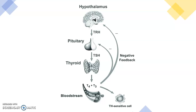The anterior pituitary is stimulated to release thyroid stimulating hormone, which goes to the thyroid gland to stimulate it to release T4 and T3 — the thyroid hormones. T3 has three iodine atoms and T4 has four, which is where they get those names.